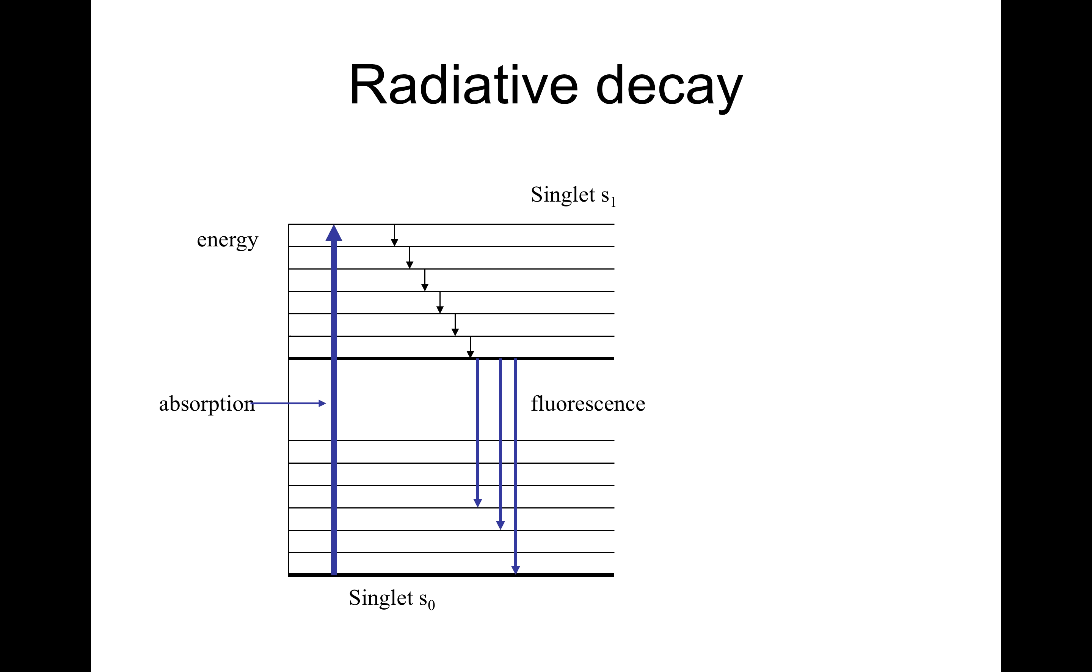From there then, it can jump back to singlet S0 giving fluorescence. This diagram is known as the Jablonski diagram.